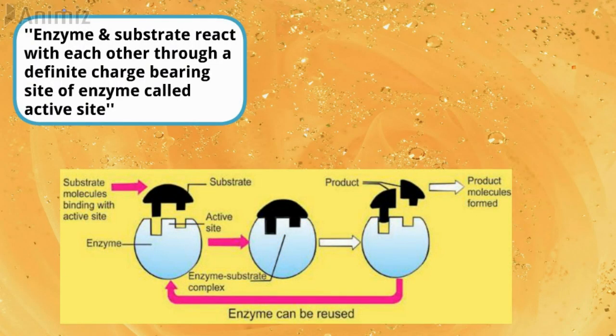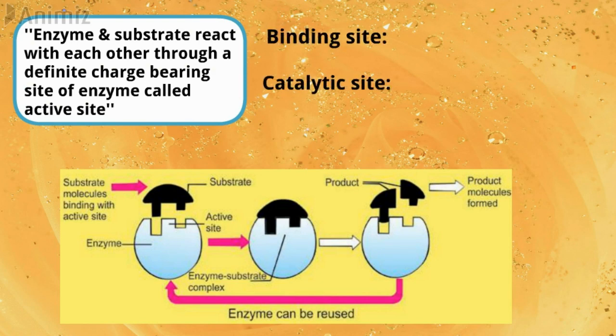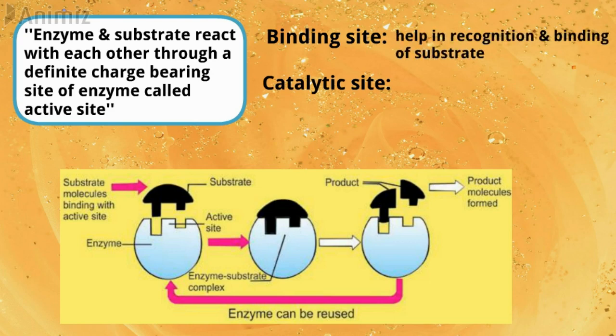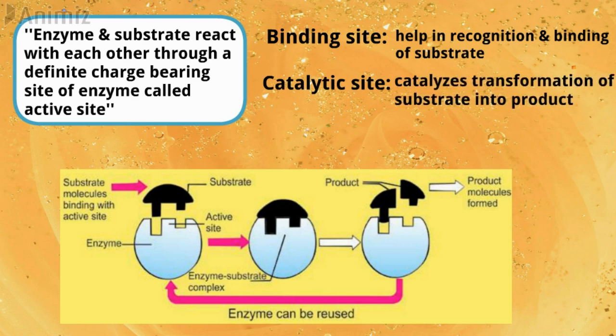The active site of the enzyme is made up of two definite regions: the binding site and the catalytic site. The binding site helps the enzyme in the recognition and binding of a proper substrate to produce an enzyme-substrate complex. This activates the catalytic site, which then catalyzes the transformation of substrates into products. After catalysis, the enzyme detaches itself from the products unchanged, and enzymes require an aqueous medium for their activity.